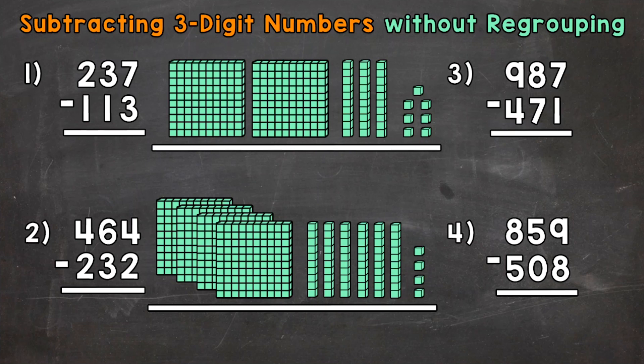To the right of the problem, I have 237 represented by base-10 blocks. We have a 2 in the hundreds place, so here are our two hundreds. Then we have a 3 in the tens — here are our three tens. And then a 7 in the ones — so here are our seven ones.